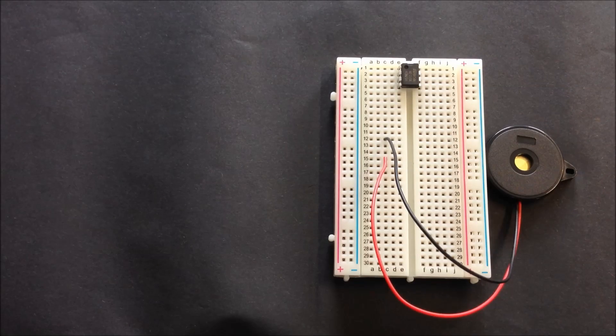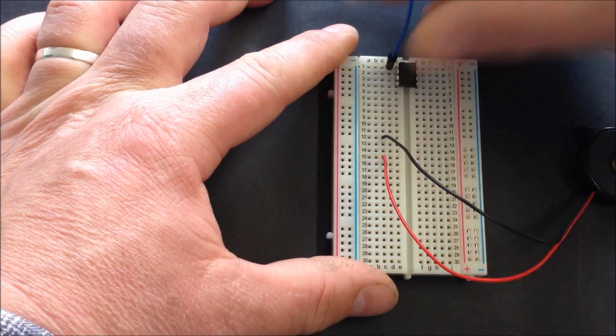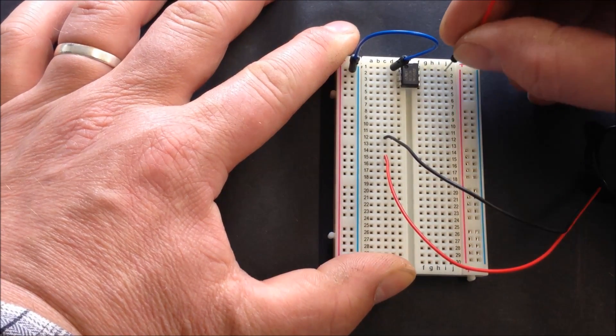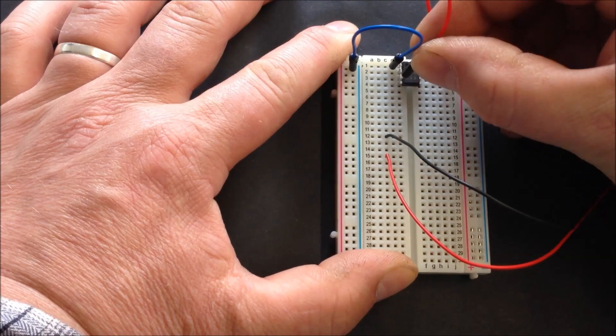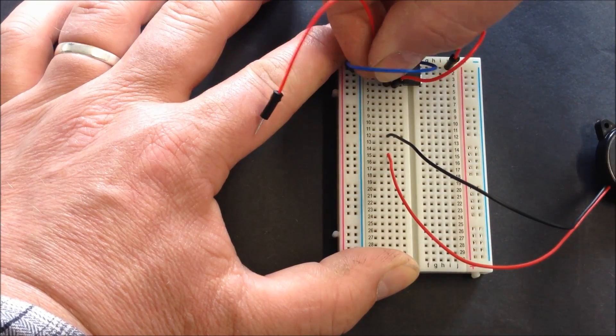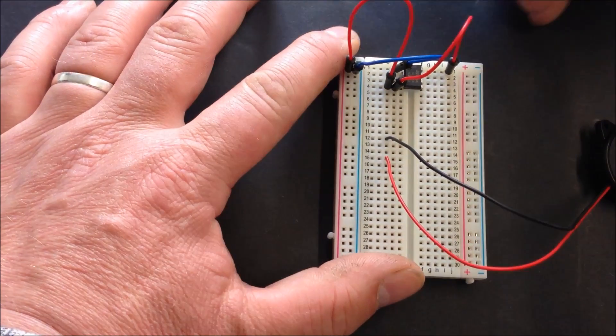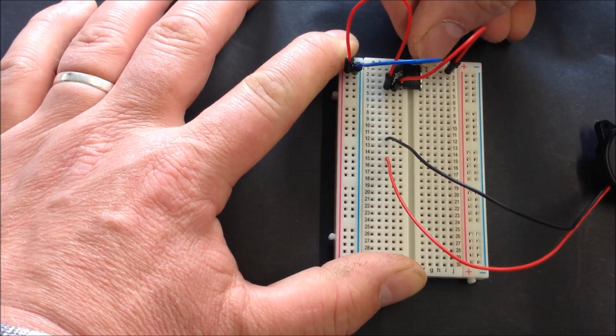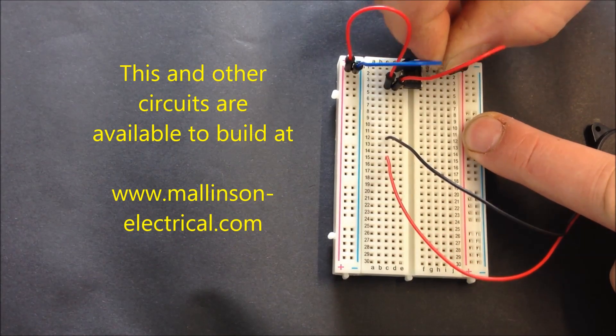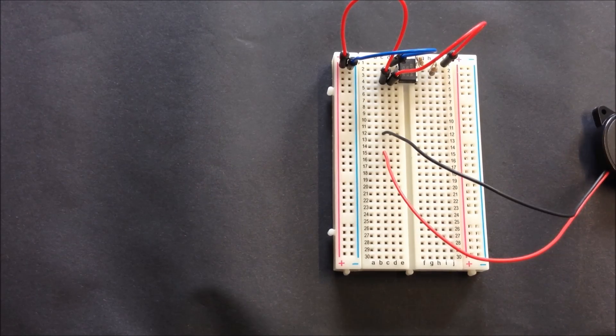So then it's just a case of hooking up the 555 according to the drawing. Pin number 1 will go to the minus. Pin number 8 connects to number 4, and pin number 4 connects to the positive rail. Now we need a resistor bridge between 8 and 7, and 7 and 6. See how I've folded the resistors over on themselves and trimmed the wires to suit.